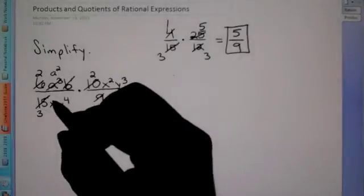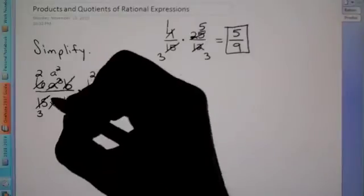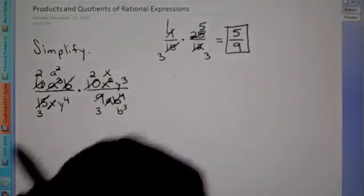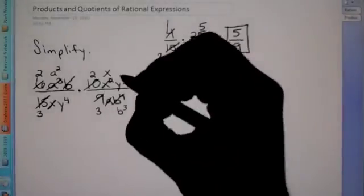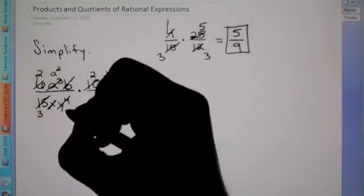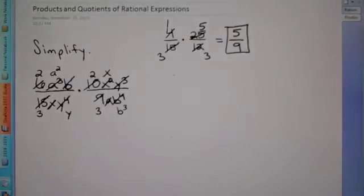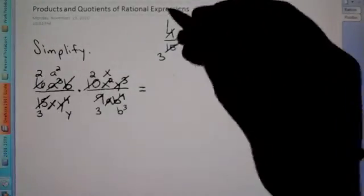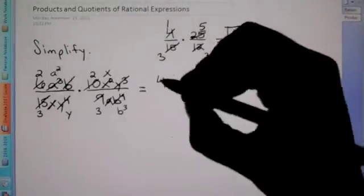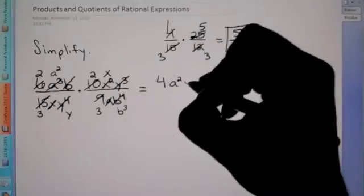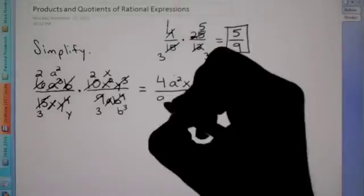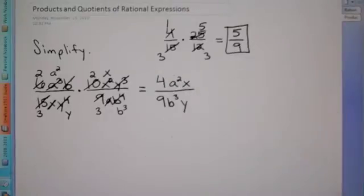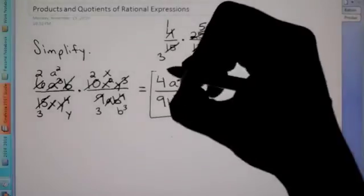Now let's deal with the X. We have X to the 1st on bottom and X to the 2nd on top, so I get rid of this X and lower that by 1 so it becomes X to the 1st. And now I have Y to the 3rd on top, Y to the 4th on bottom, so I can get rid of all 3 on top — that leaves me with just Y on bottom. We've reduced all that we can. Multiplying across: 2 times 2 is 4 on top with A squared and X; on the bottom, 3 times 3 is 9, with B to the 3rd and then Y. This would be our final answer — we can't reduce any more.